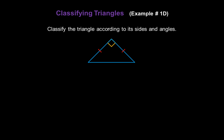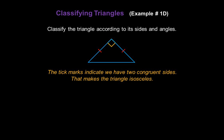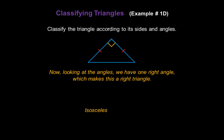One more example. Let's classify this triangle according to sides and angles. Looking at the sides, we see tick marks indicating that two of the sides are congruent, which makes this triangle isosceles. Now looking at the angles, we notice we have one right angle, which makes this a right triangle. So what we have is an isosceles right triangle.